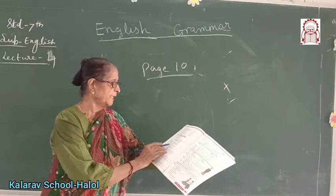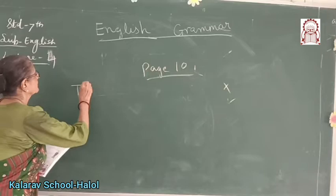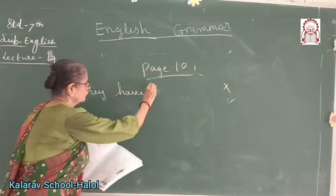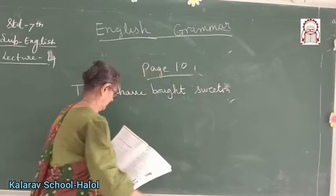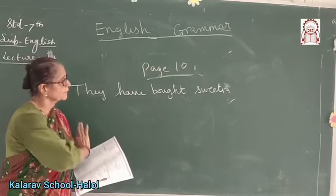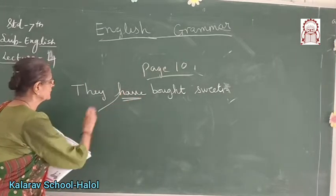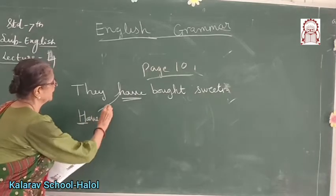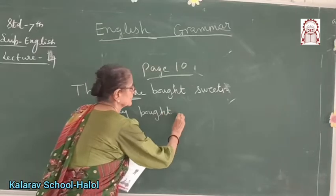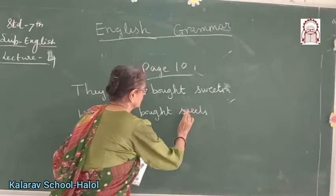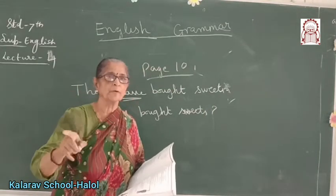Now, let us discuss this in detail. For instance, 'They have bought sweets.' This is a simple sentence. Now, we have to change it to an interrogative sentence. Especially remember, the auxiliary verb will come in front and it will become a capital letter. So it becomes: 'Have they bought sweets?' Do not forget to put a question mark. If you don't put a question mark, you will get it wrong and will not get marks in the exam.